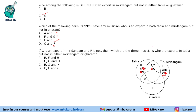Question 4: Which are the three musicians who are expert in tabla but not in either mridangam or ghatam? That means only tabla — we have H, F, and E. So E, F, and H is our answer. This was the solution to the set and the answers to the questions.